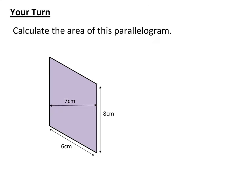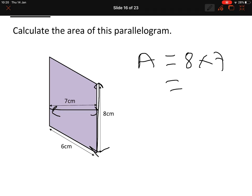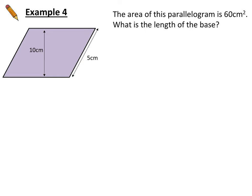Pause and have a go. The base is 8 and the perpendicular height is 7 cm, so area = 8 × 7 = 56 cm². The measurement of 6 is not the height because it is slanted.